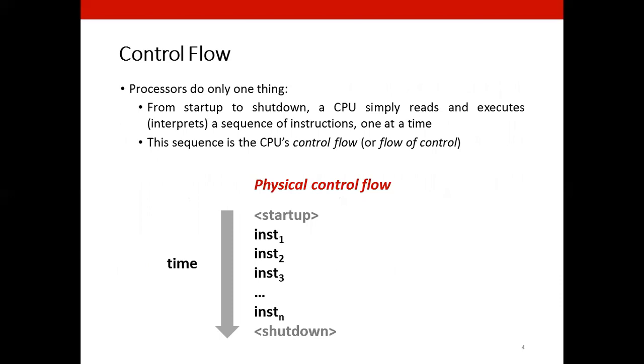And as we know, the processors basically do only one thing: they execute one instruction at a given time from start to end. It fetches the instruction from the code section of the memory, decodes the opcode in the instruction, executes the instruction, and then the write back or memory operations are performed. So this is what is called the CPU's control flow or flow of control.